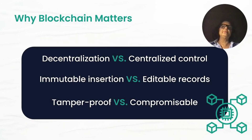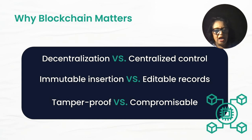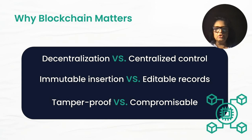Why does blockchain matter? Why is it paradigm shifting? It's decentralized versus centralized. Each time you go to Facebook, Instagram, Twitter, or Google — any platform you use — your digital footprints are controlled by that platform. They can kick you out, and they monetize your footprints. Facebook and Instagram make billions of dollars through your data and advertisements. Google also makes money through advertisement. In a decentralized world, there's more control given to users where they can find ways to monetize their own footprints and data.